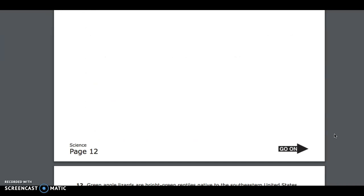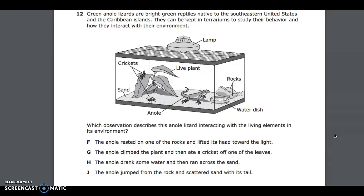Number 12. Students keep anole lizards in terrariums to study their behavior and how they interact with their environment. Lamp, live plant, crickets, sand, anole, rocks, water dish. Which observation describes this anole lizard interacting with the living elements in its environment? F, the anole rested on one of the rocks and lifted its head toward the light; G, the anole climbed the plant and then ate a cricket off one of the leaves; H, the anole drank some water and then ran across the sand; J, the anole jumped from the rock and scattered sand with its tail.